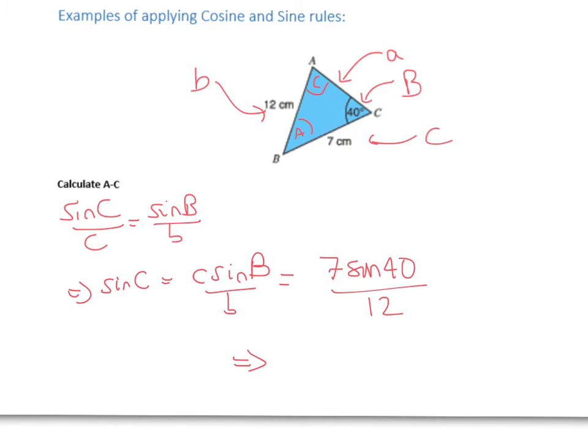Once you've taken the inverse sine of that calculation, you get the angle C is 22.02181 degrees. So we've got this angle. But what we really want is the angle between the two sides b and c - we want A. How can we do that?